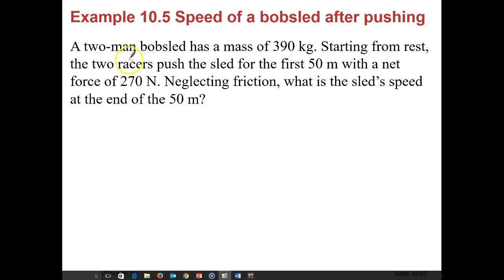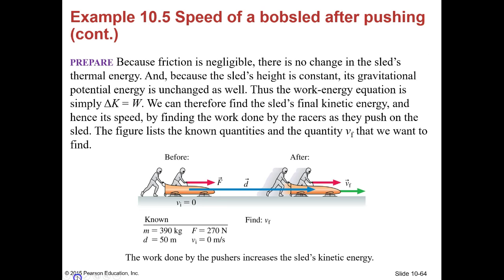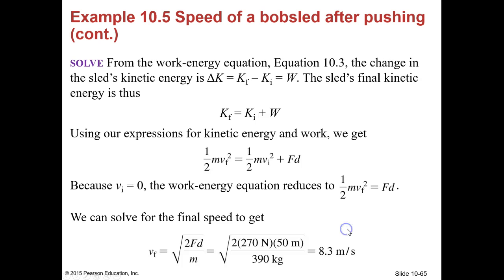Let's look at Example 10.5: the speed of a bobsled after pushing. A two-man bobsled has a mass of 390 kilograms. It starts from rest. The two racers push the sled for the first 50 meters with a net force of 270 newtons. Neglecting friction, what is the sled's speed at the end of those 50 meters? We know the original speed is zero, mass is 390 kg, distance is 50 m, and force is 270 N.